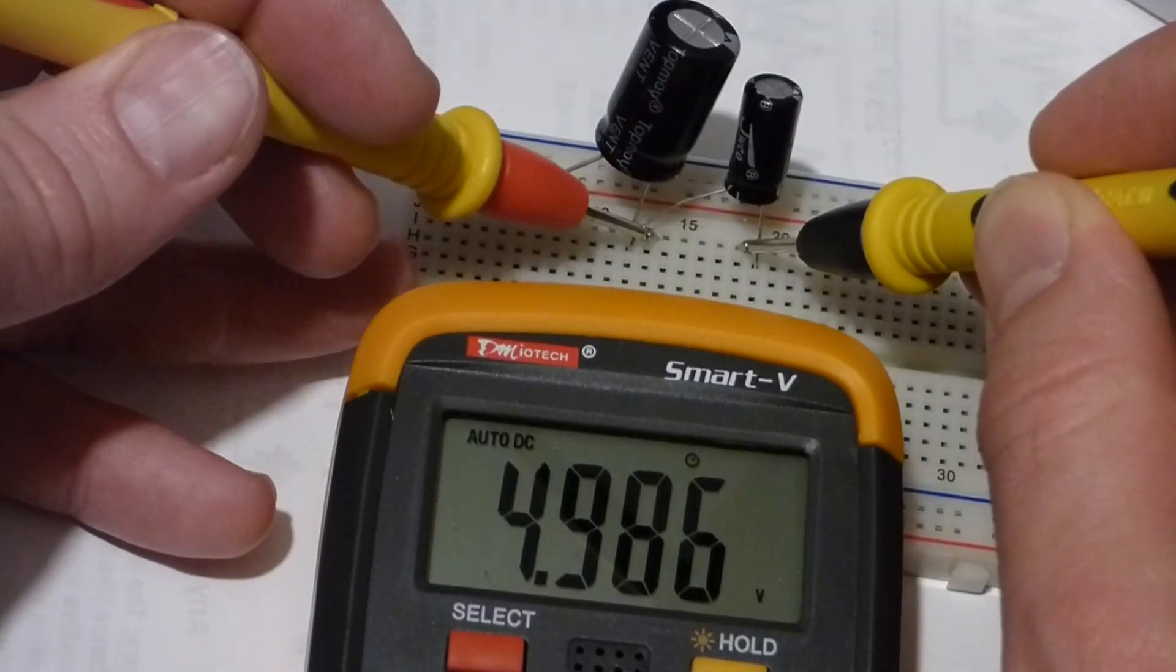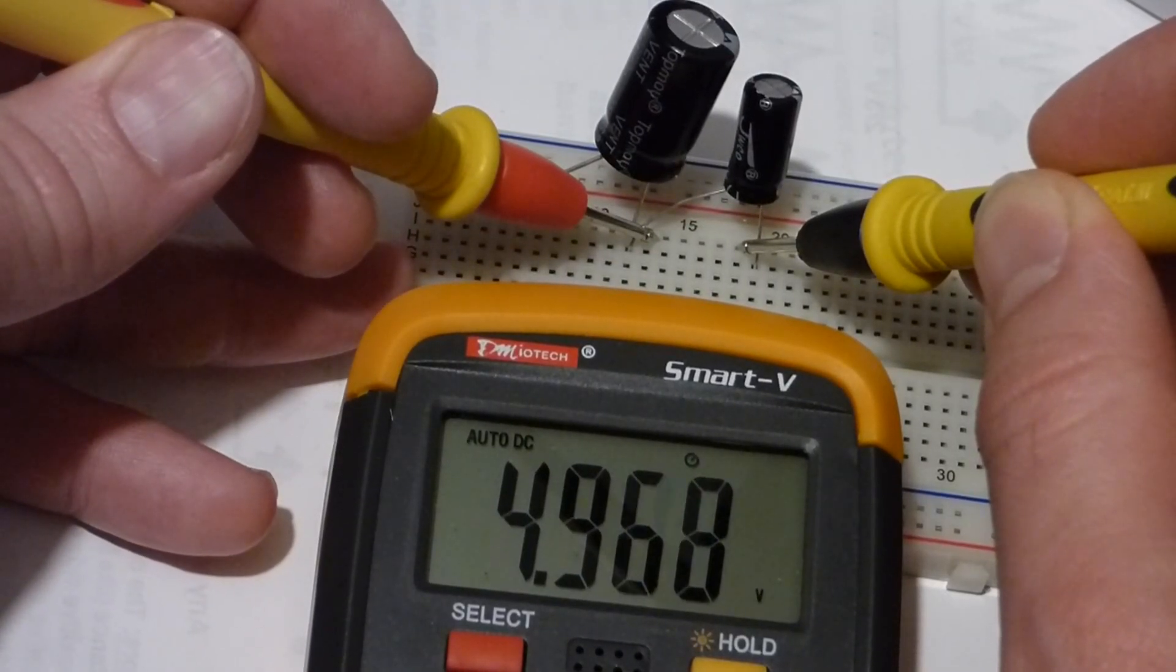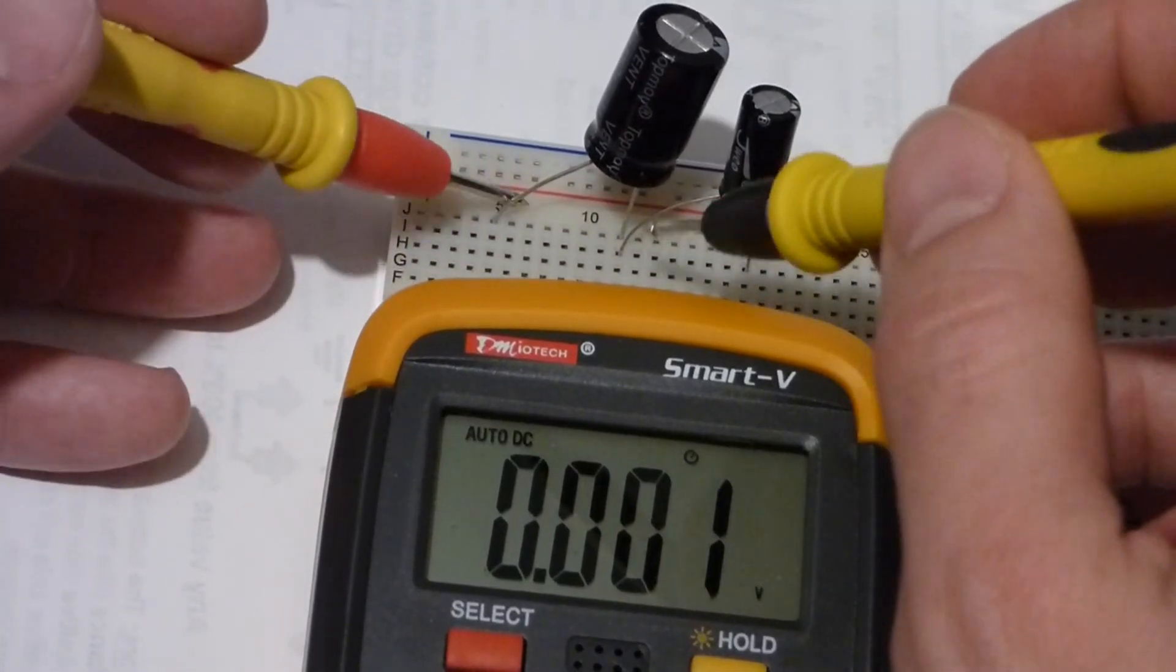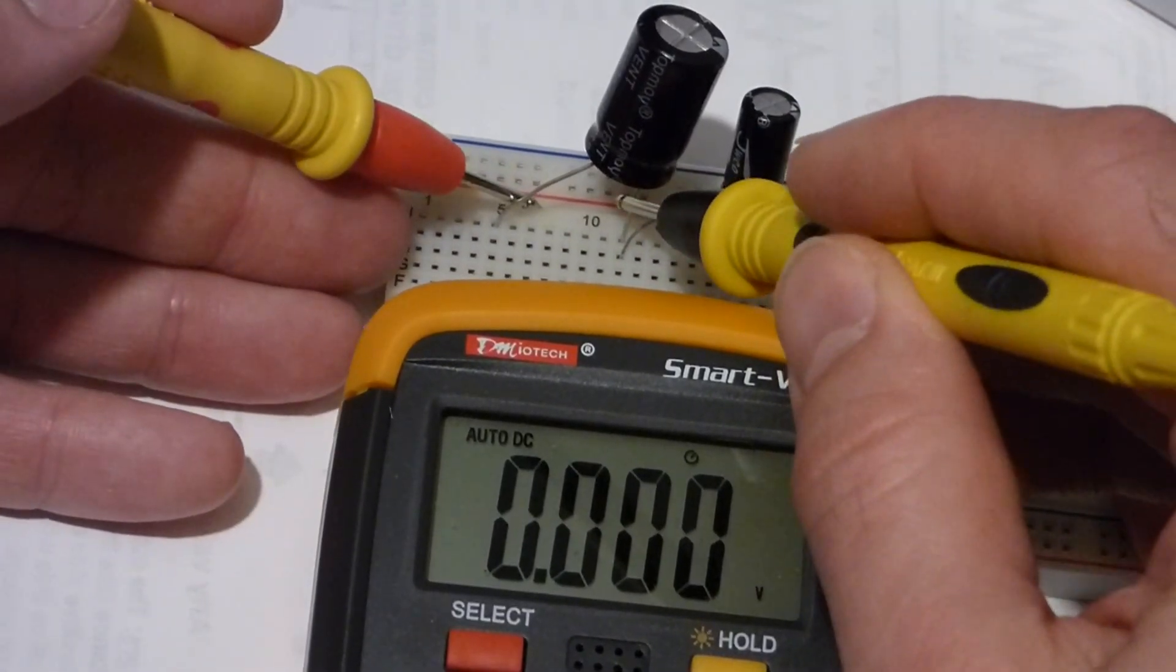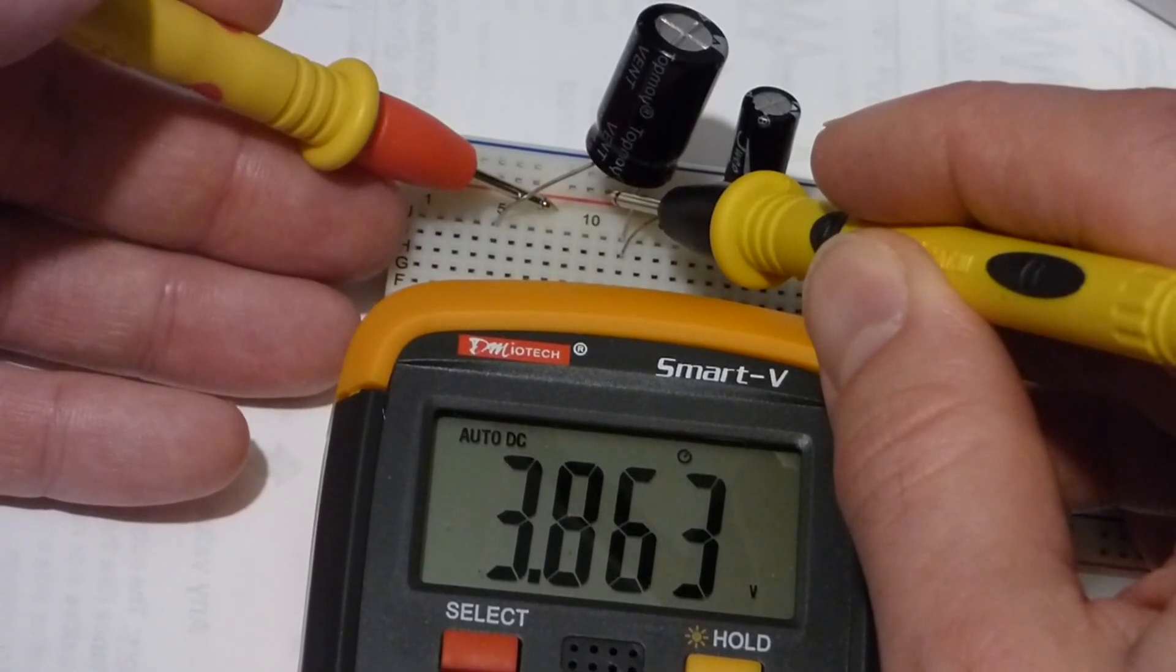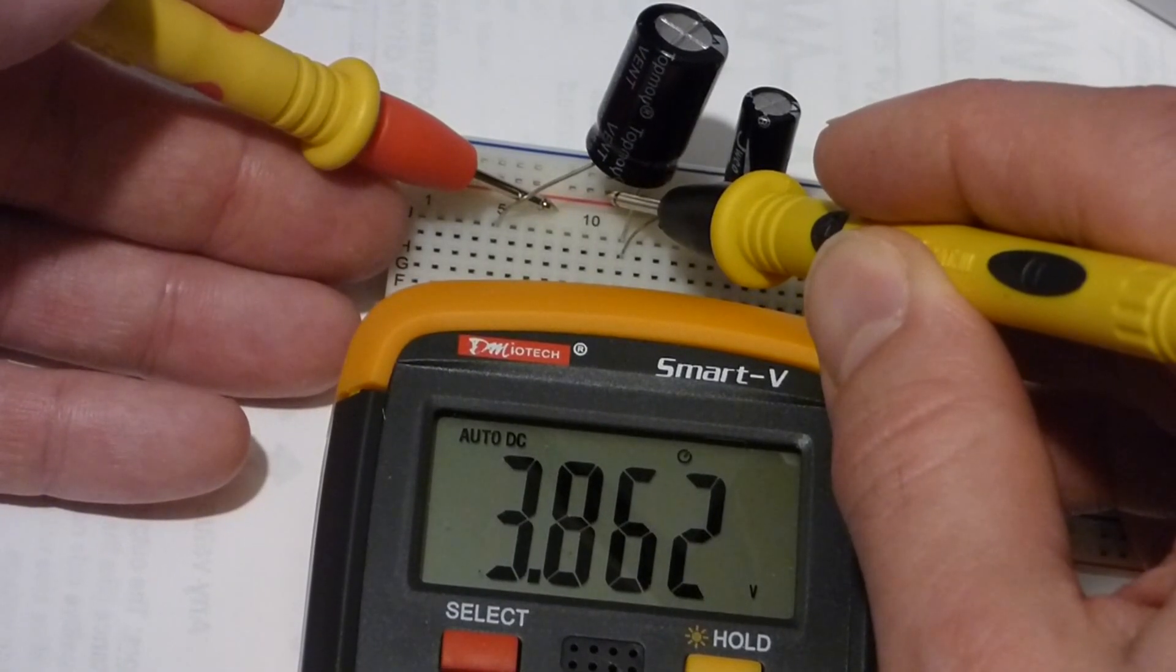Just shy of that. But now if I just measure the little one, you see it's almost 5 volts. So that's more than half of the 9 volts. And the bigger one, you see it's less than 4 volts.